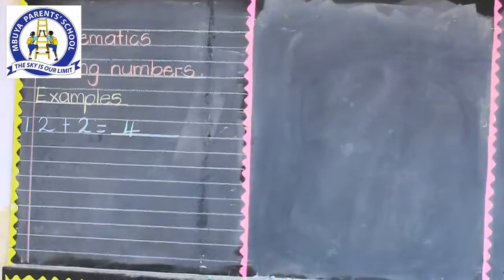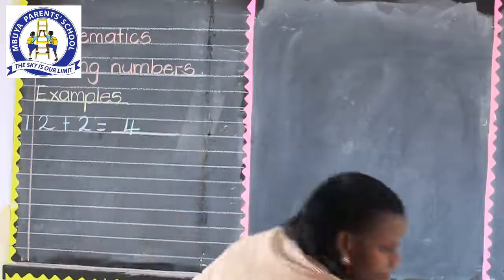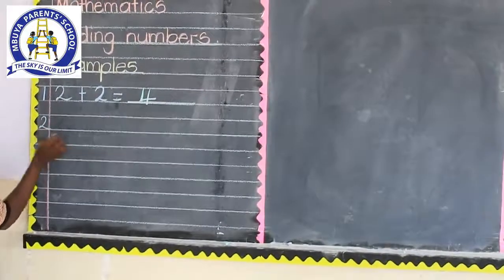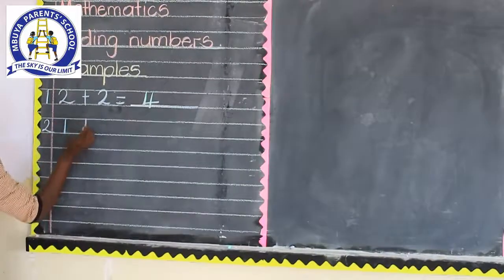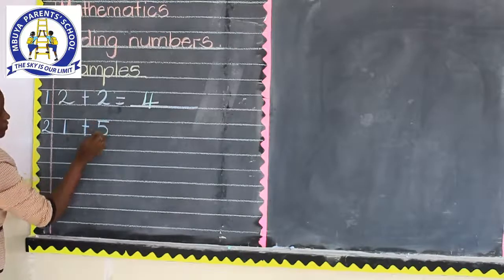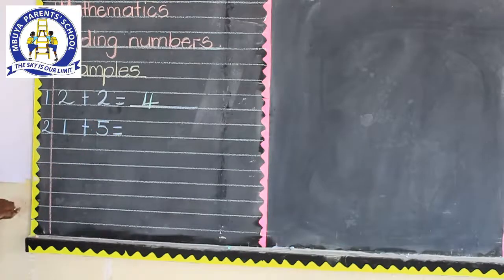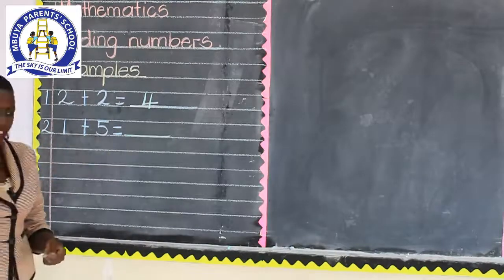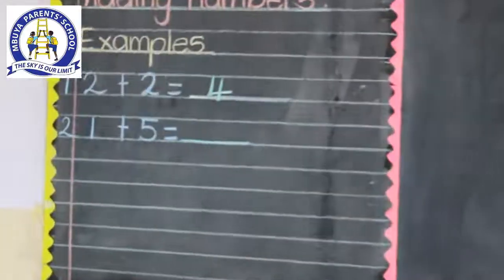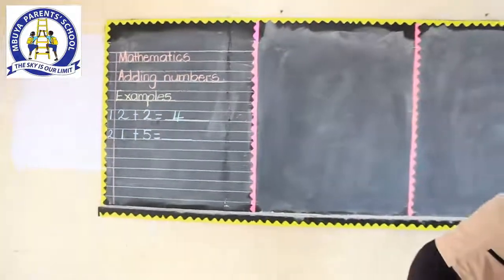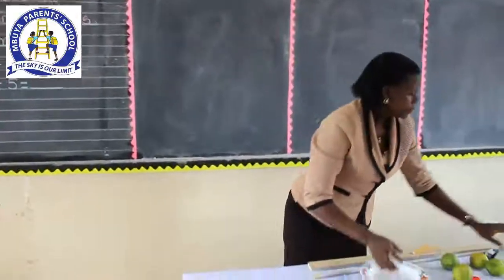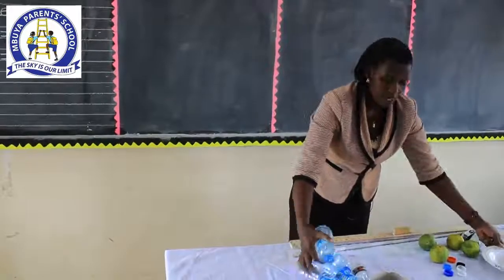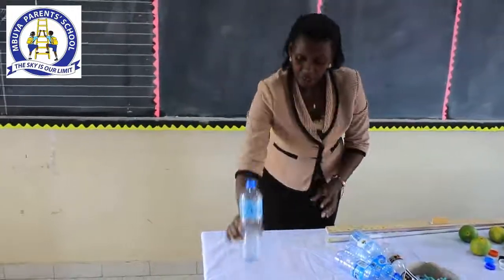Have it together. Now, let's look at the second number. 1 plus 5. What do we get? When you add 1 to 5, what do you get? This time, I'm going to use the bottles. These are my bottles. I'm sure you also have some at home. They're saying 1 bottle, this one.